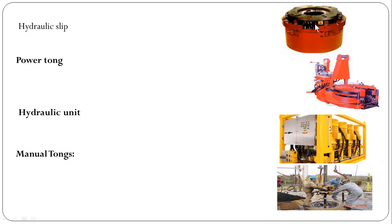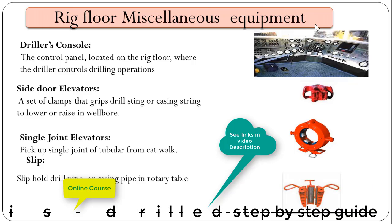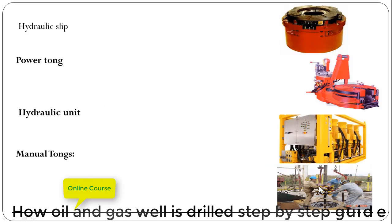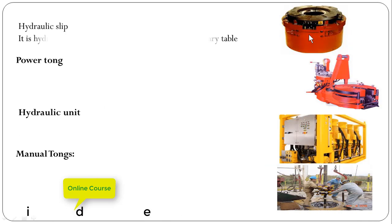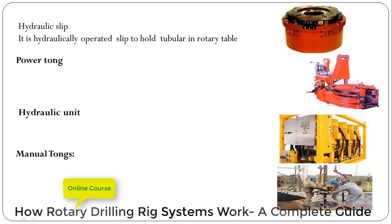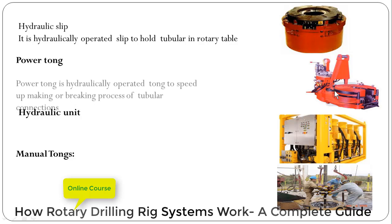Hydraulic slip. It is a hydraulically operated slip used to hold the tubular in the rotary table. Whereas the previous one is a manual slip, this one is called a hydraulic slip and it is hydraulically operated to hang the tubular inside the rotary table.